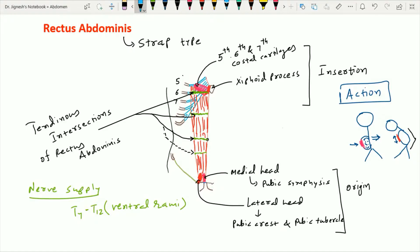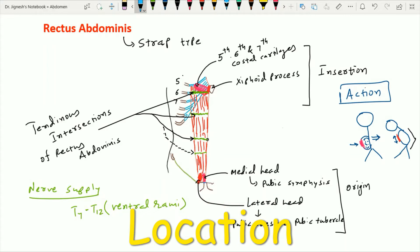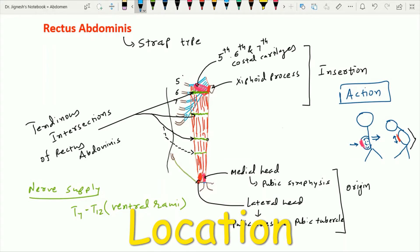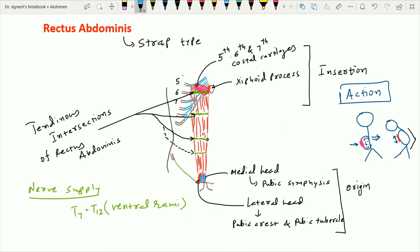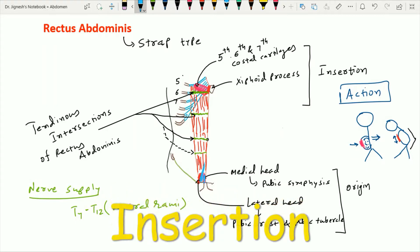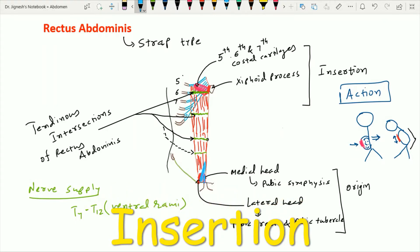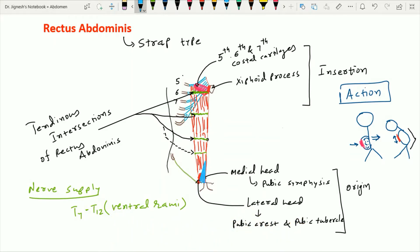Sometimes a triangular muscle is present just anterior to the rectus abdominis muscle within the rectus sheath. This muscle arises from the pubic symphysis as well as from the pubic crest, and its fibers pass upward to insert into the linea alba midway between the umbilicus and the pubic symphysis. This muscle is called the pyramidalis muscle.